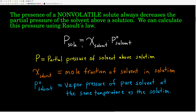This equation here is Raoult's Law, and it lets us calculate the vapor pressure above a solution with a non-volatile solute. It says that the vapor pressure above the solution equals the mole fraction of the solvent — not the solute, but the solvent — times the vapor pressure of the pure solvent at that temperature. The superscript zero means we're talking about the vapor pressure that solvent would have if it had no solute in it at all at that temperature.